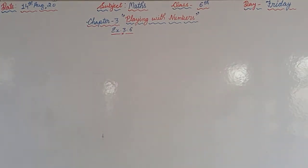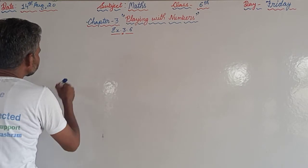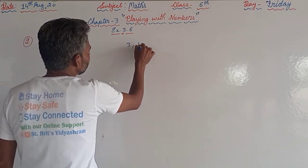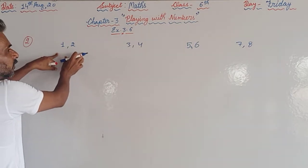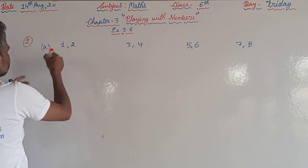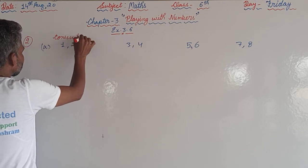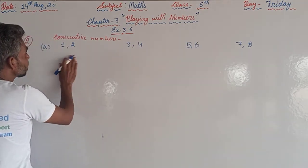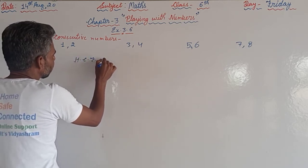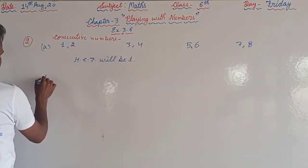In question number 2, you are supposed to keep your book with you while watching. Question 2(a) asks: what is the HCF of 2 consecutive numbers? Consecutive means we don't skip any number — for example, 1,2 or 3,4 or 7,8. Between any 2 consecutive numbers, the only common factor is 1, so the HCF will be 1.